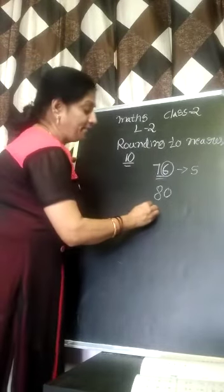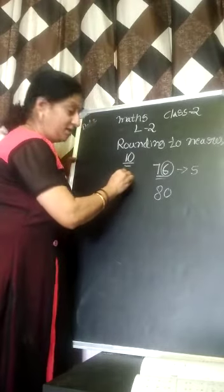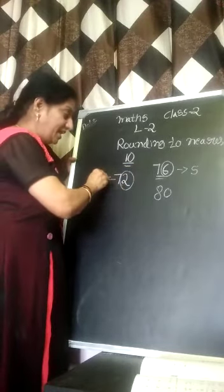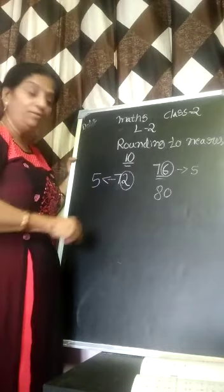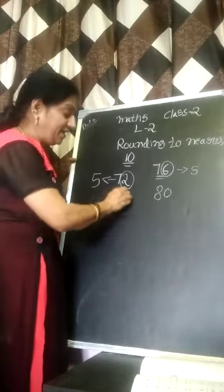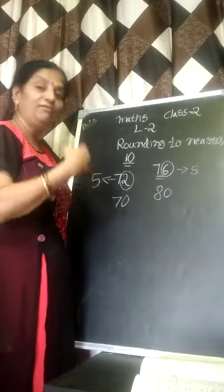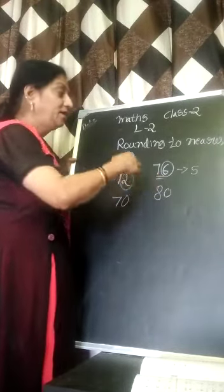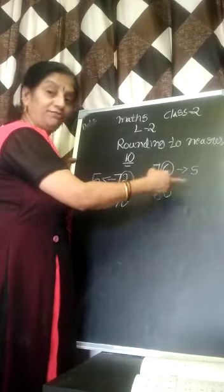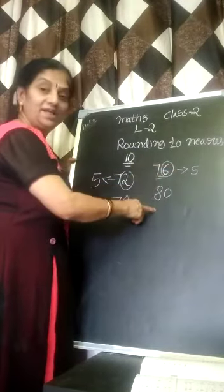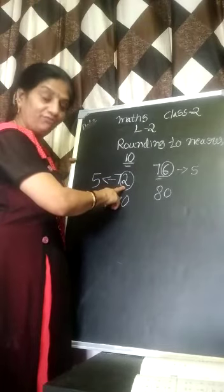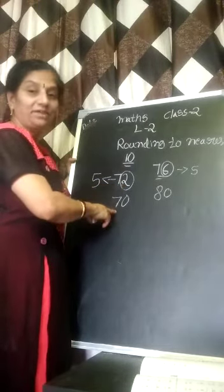For example, 72. So now you concentrate on the ones place — the ones place is lesser than 5. So how are we going to make it? 6 comes after 5, so after 5 you have to go to the next 10. But since 2 is lesser than 5, you have to write the same tens — that is 70.